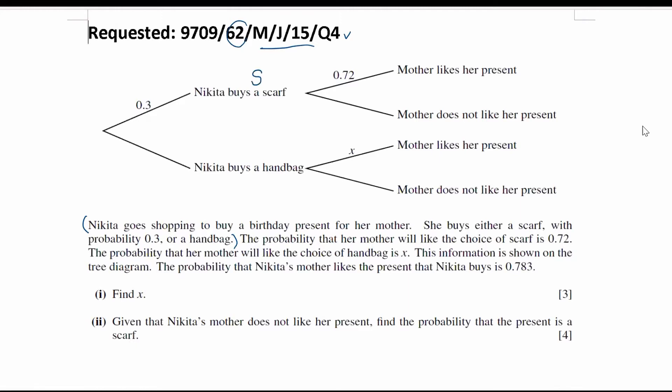Nikita buys a handbag, capital H for the handbag. So the probability she buys a scarf is 0.3. That means the probability that she buys a handbag is 0.7, because the total of these two branches must be equal to one.